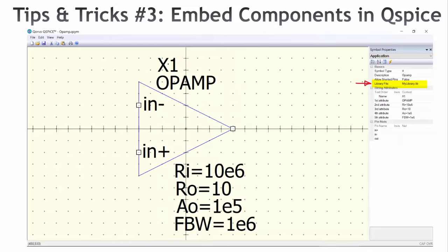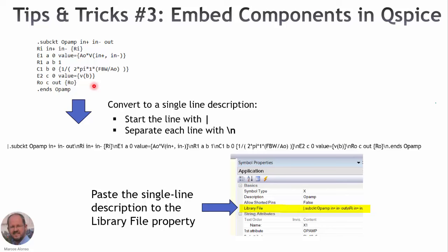But there is another possibility which is to embed the description of the component directly in the component itself. So in this way we don't need to include any external file to do the simulation and the complete simulation file is going to be autonomous and can run without anything else. So let's see how to do this.